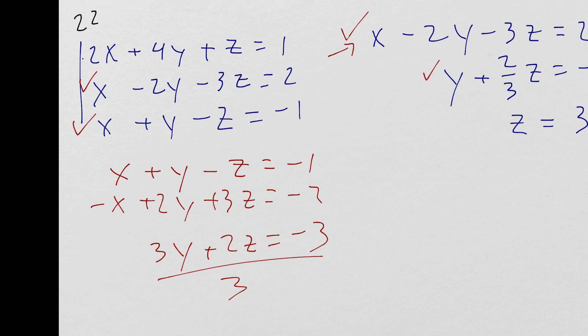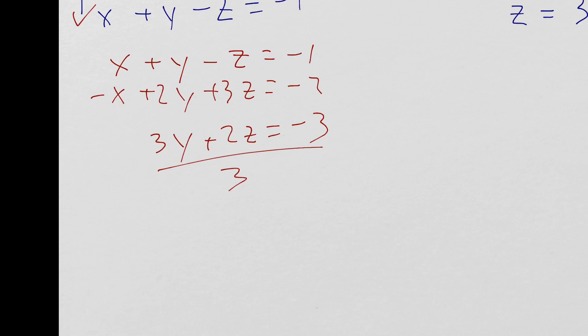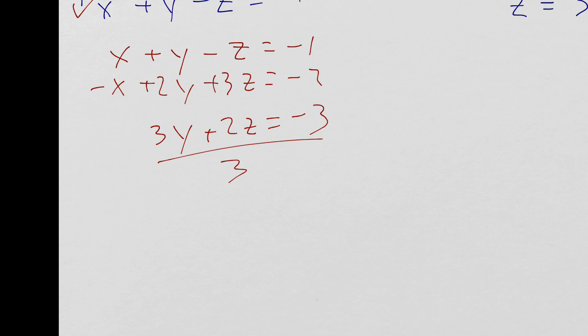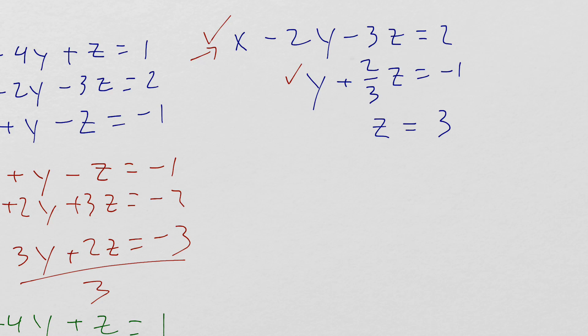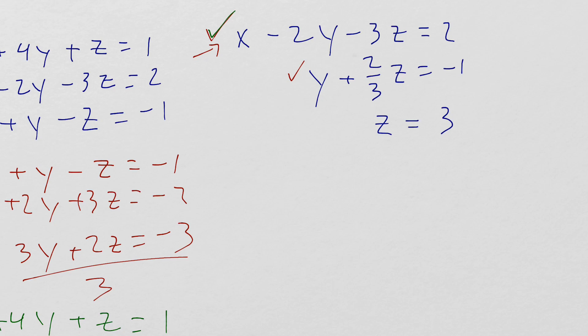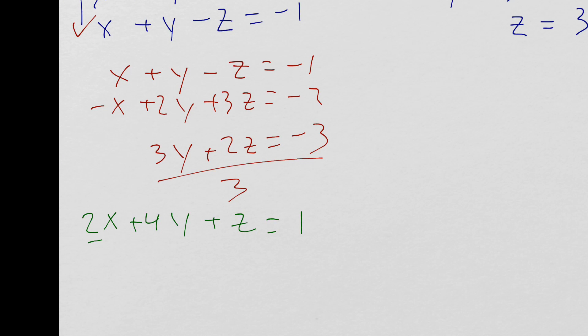Third equation is this top one right here. I'm going to write that. I think I'll have enough room here, I'll put it right down here. So, 2x plus 4y plus z equals 1. Multiply this equation up here by a negative 2, so I can get rid of the positive 2x here.